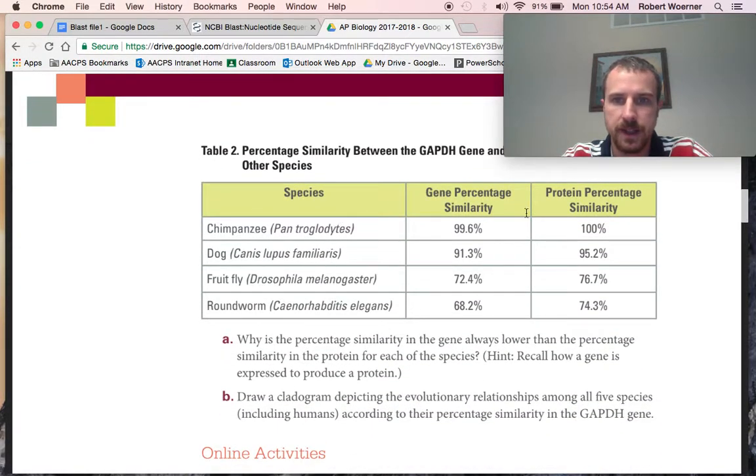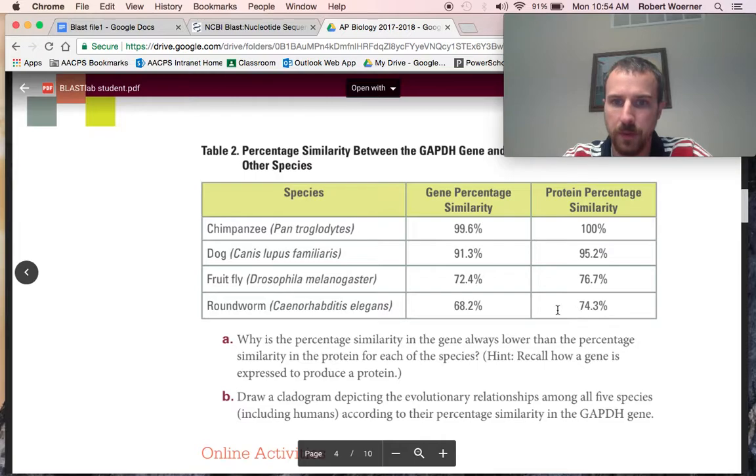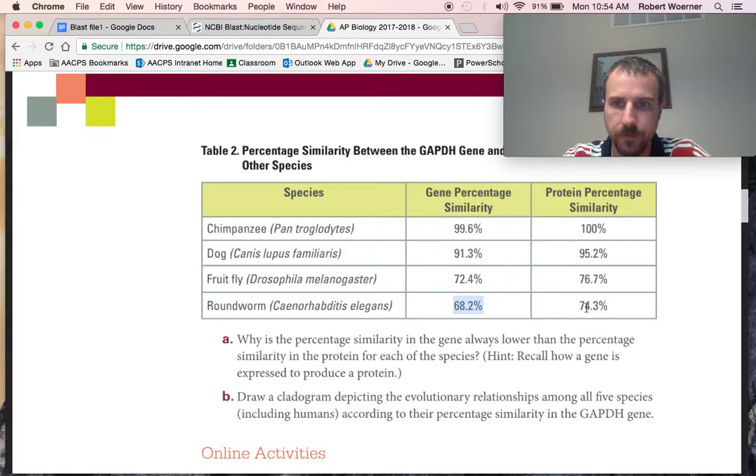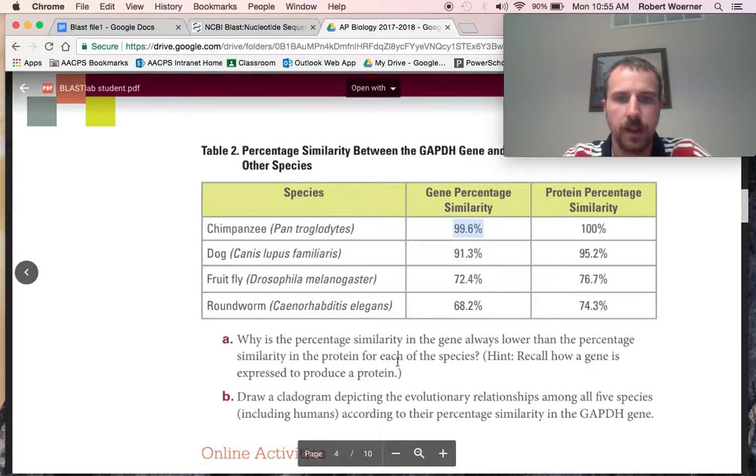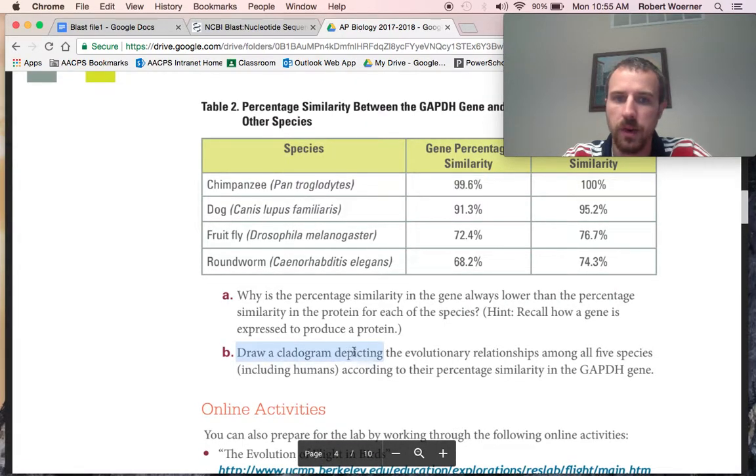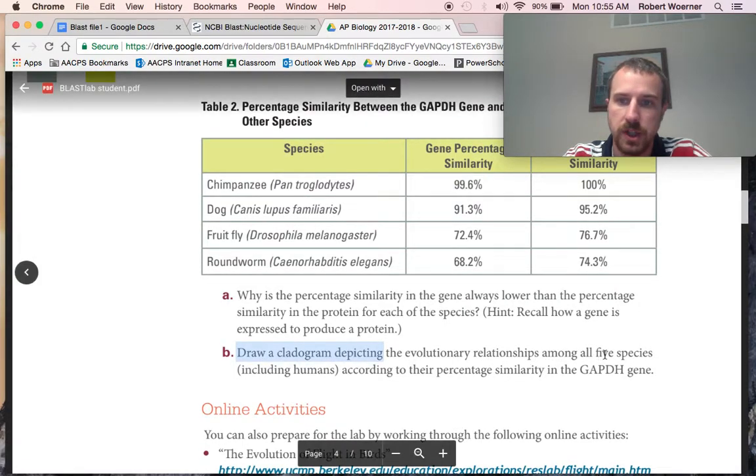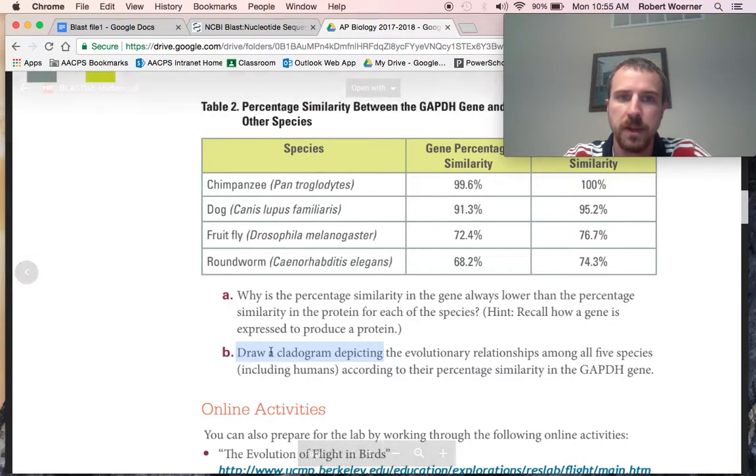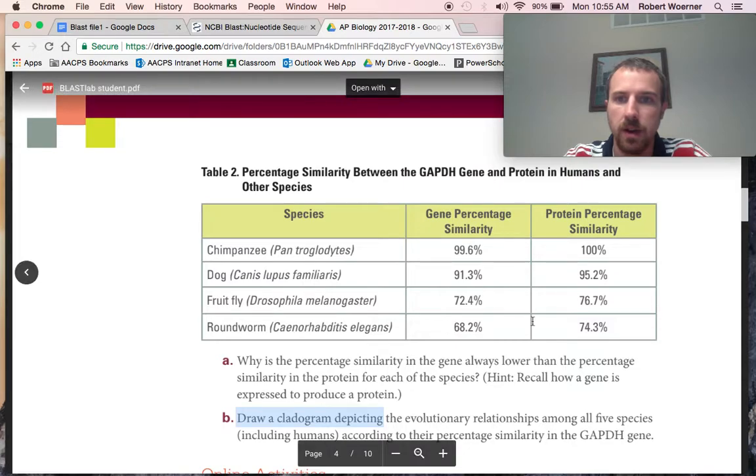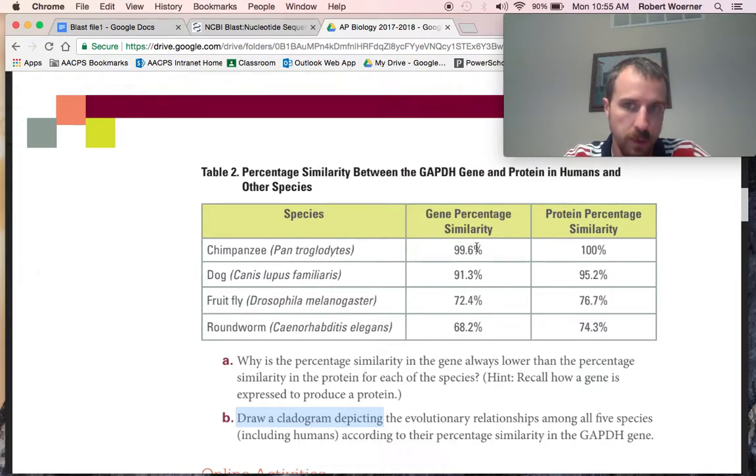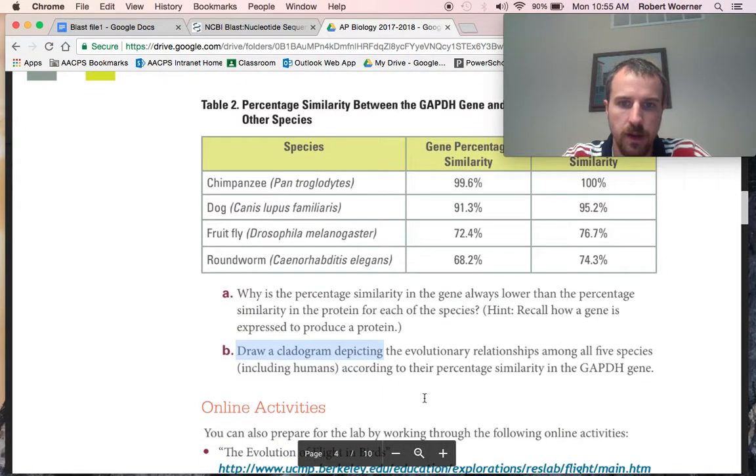If we look at this figure, this table, we see that roundworm has the least common. Next is the fruit fly. Next is the dog. And next is the chimpanzee. So, we need to draw a cladogram depicting the evolutionary relationships between all five species. We have to include humans because we're basing all the similarities off of humans.